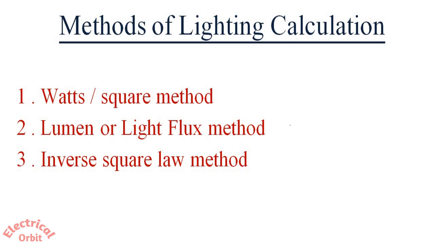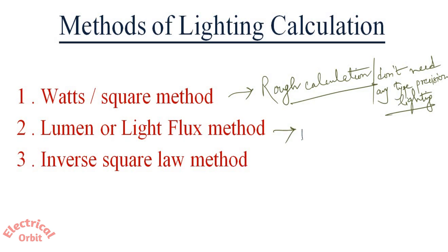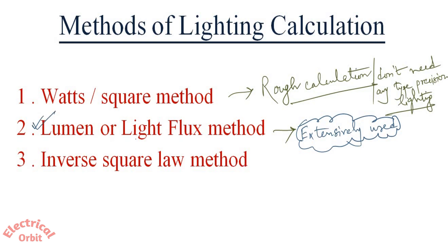There are standard methods followed for lighting calculation. First is the watt per square method, which is usually used where rough calculation is needed and no precision lighting is required — for example, a space where just basic lighting is needed without a proper lighting level or sophisticated work going on. Next is the lumen or light flux method, which is extensively used for most lighting calculations, and our calculation will also be based on this lumen or light flux method.